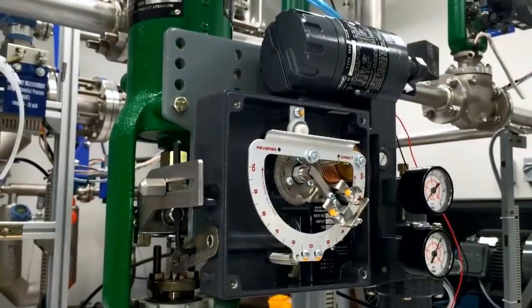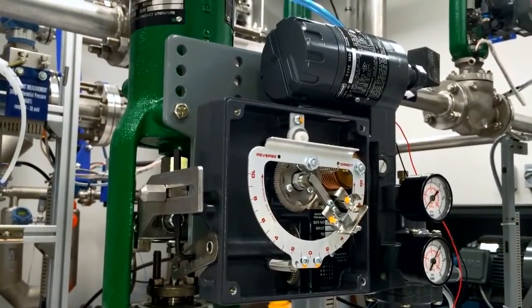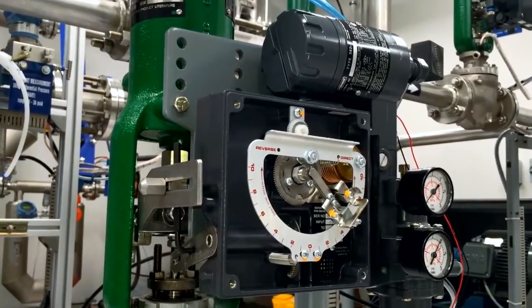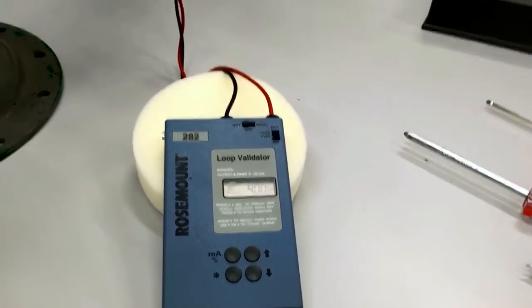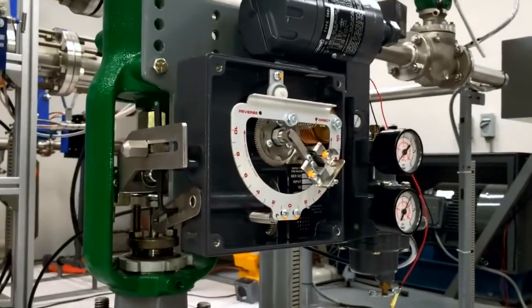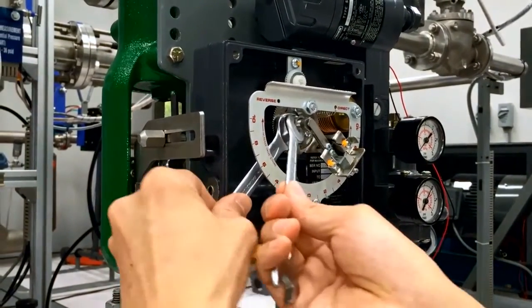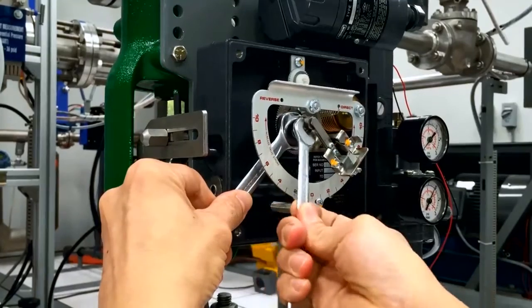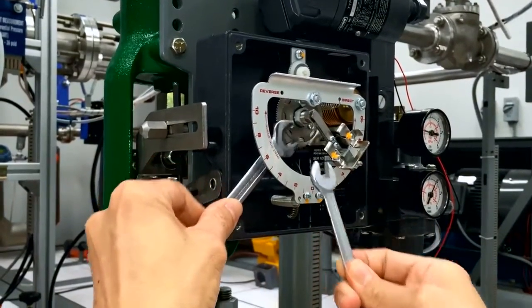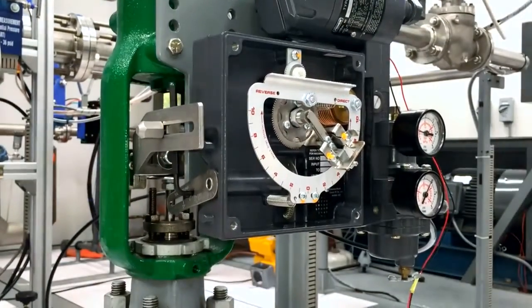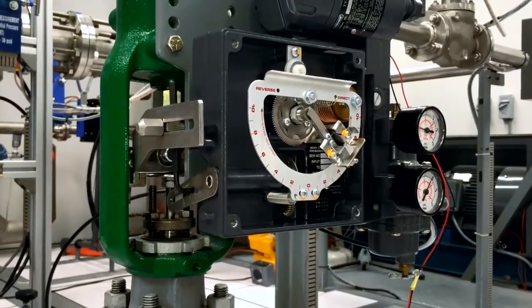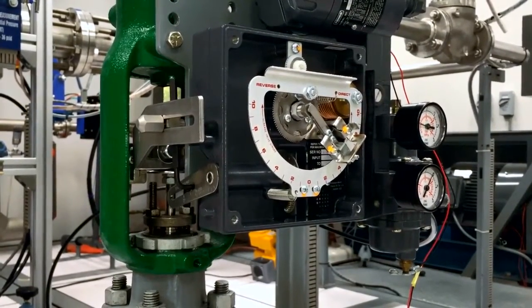To start calibration, we first apply an input signal equal to the low value of the input signal range, in this case 4 milliampere. We first loosen the nozzle lock nut and adjust the nozzle for zero valve position. Changing the nozzle position is intended only as a means of zero trim adjustment. Whenever nozzle position is changed, the zero reference point is changed.